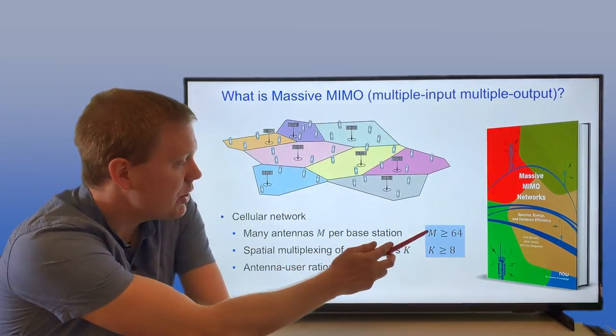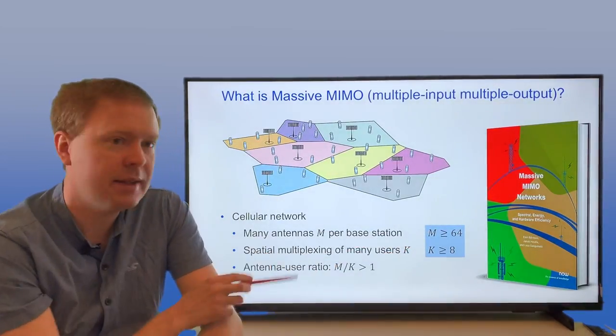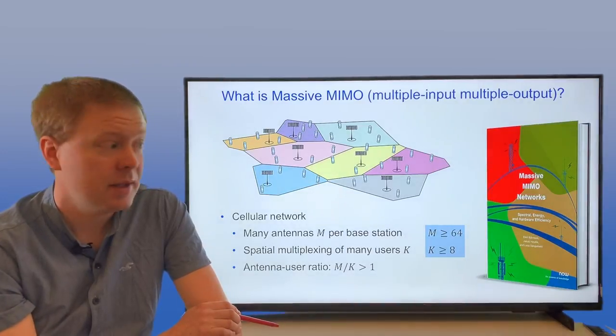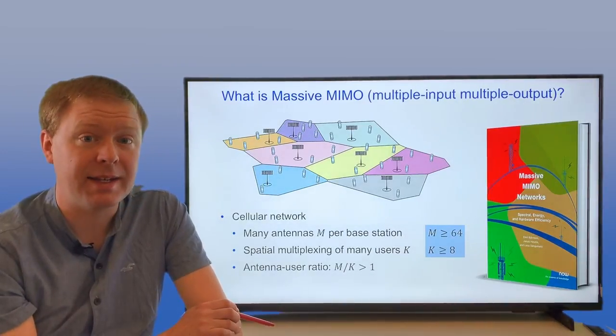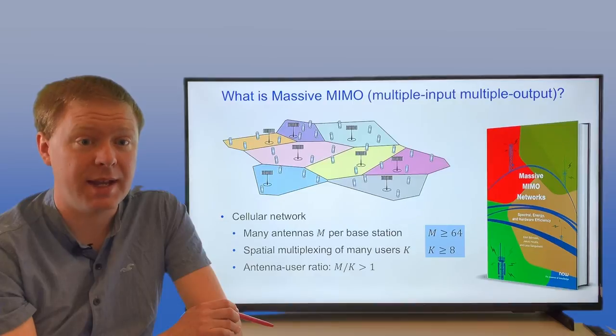As you can see here, if you take the ratio m divided by k, then it's greater than 1. This is also one of the main ideas with Massive MIMO - we have more antennas than we have users.